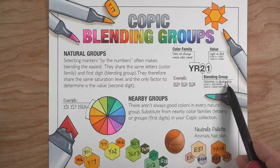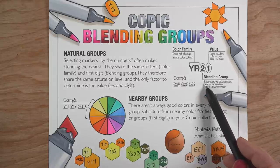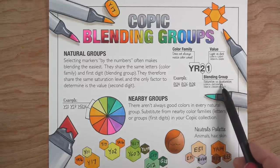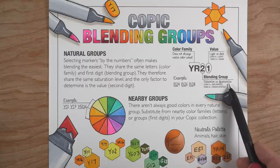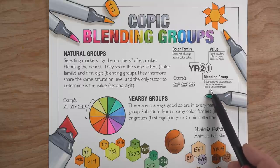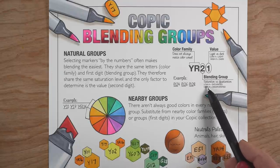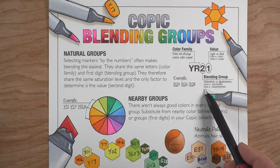The first digit means it's blending group number two in the YR color family. The group number tells you how saturated the color is. A low number — zero, one, or two — means it's very bright and intense.